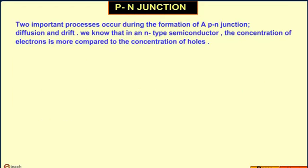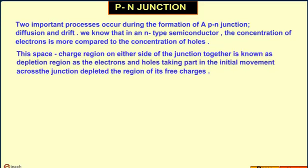Two important processes occur during the formation of a P-N junction: diffusion and drift. In an N-type semiconductor, the concentration of electrons is more compared to the concentration of holes. This space-charge region on either side of the junction together is known as the depletion region, as the electrons and holes taking part in the initial movement across the junction deplete the region of its free charge.